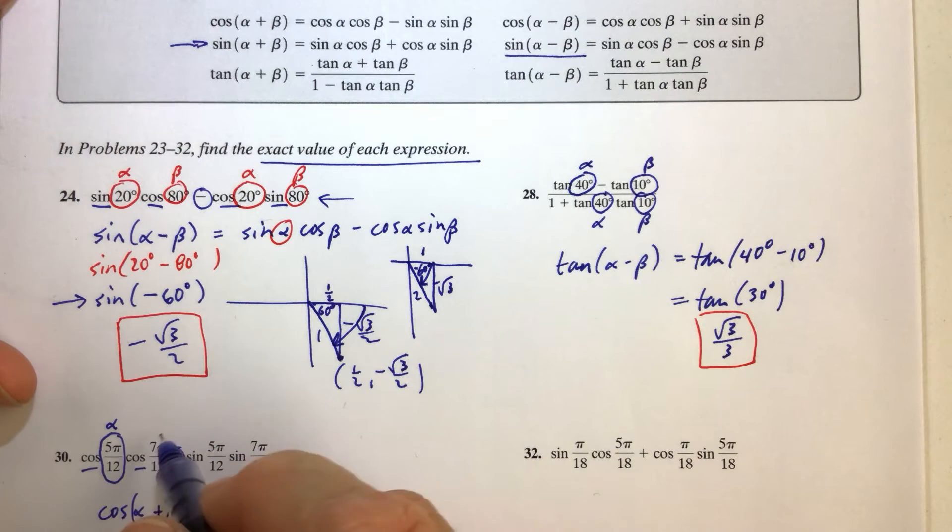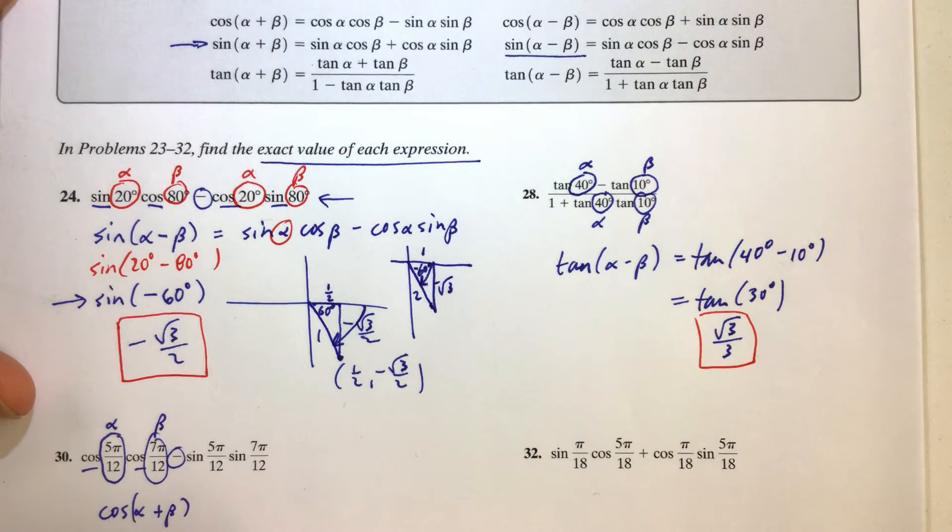Well the alpha is the first angle, and the beta is the second angle. So what we have is the cosine of 5 pi over 12 plus 7 pi over 12, and 5 pi over 12 plus 7 pi over 12 is 12 pi over 12,